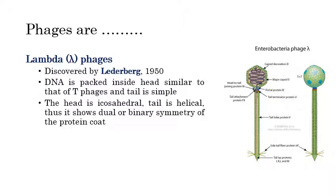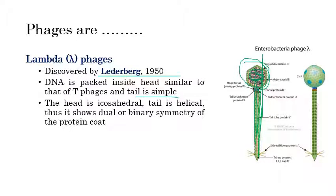There are some types of phages. The first important type is lambda phage, first discovered by Lederberg in 1950. It is almost the same as T4 bacteriophage, where the DNA is packed inside a head. However, the tail is simple in lambda-type bacteriophage. It also exhibits binary symmetry of the protein coat.